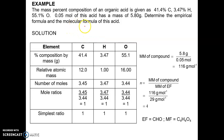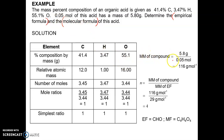We move to another example where we also need to identify the molecular formula. Applying the same concept to calculate the empirical formula from the table, we get the ratio 1:1:1. So the empirical formula is C₁H₁O₁. Since the question also requires the molecular formula, we need to find N — the ratio between the molecular formula and the empirical formula. N equals the molar mass of the compound divided by the molar mass of the empirical formula.